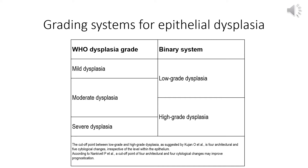Both architectural and cytological atypia are applied in grading, and abnormalities at the connective tissue interface should increase the grade. Marked atypia in the basal one third alone is sufficient for a diagnosis of severe dysplasia. Carcinoma in situ in the oral cavity is considered synonymous with severe dysplasia.